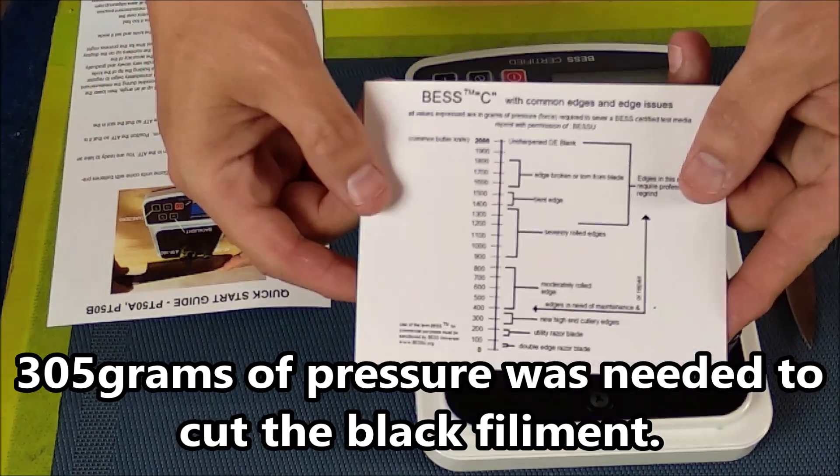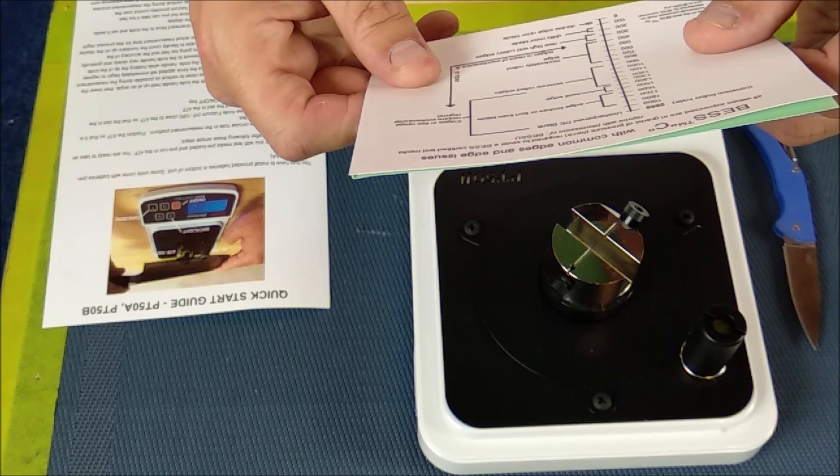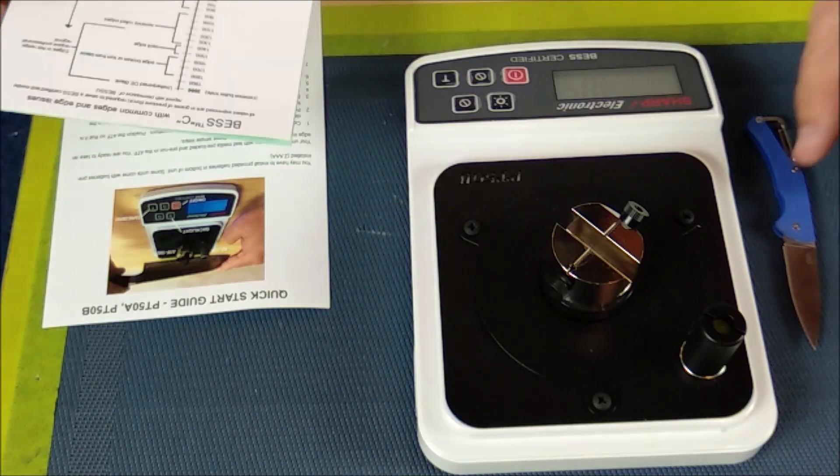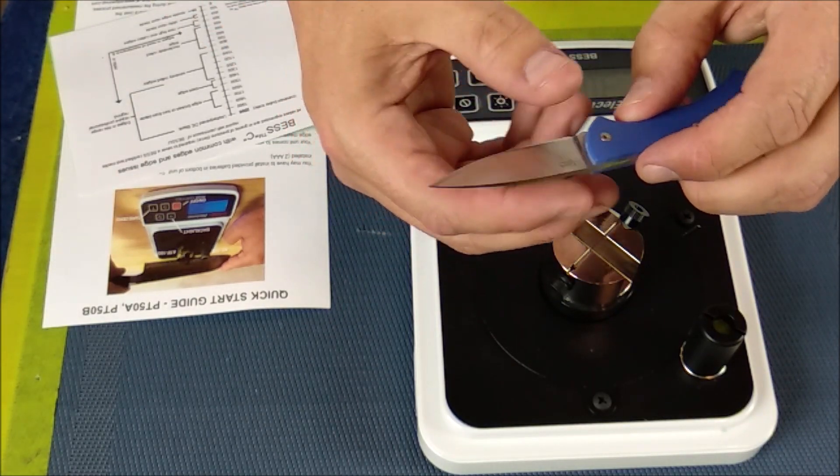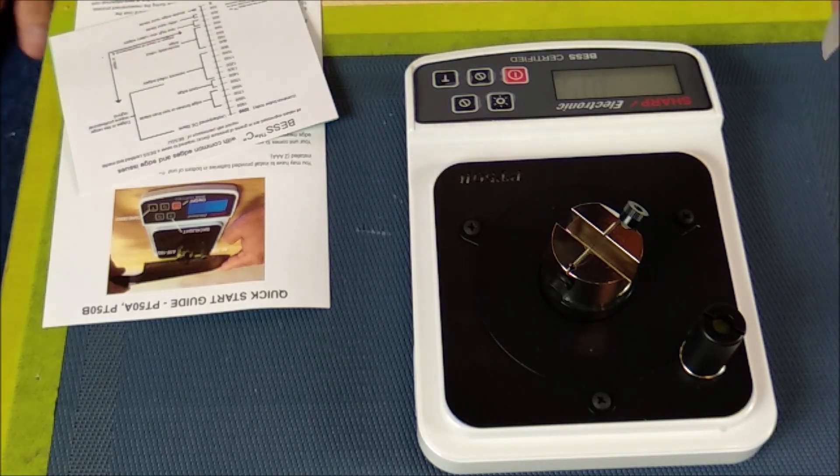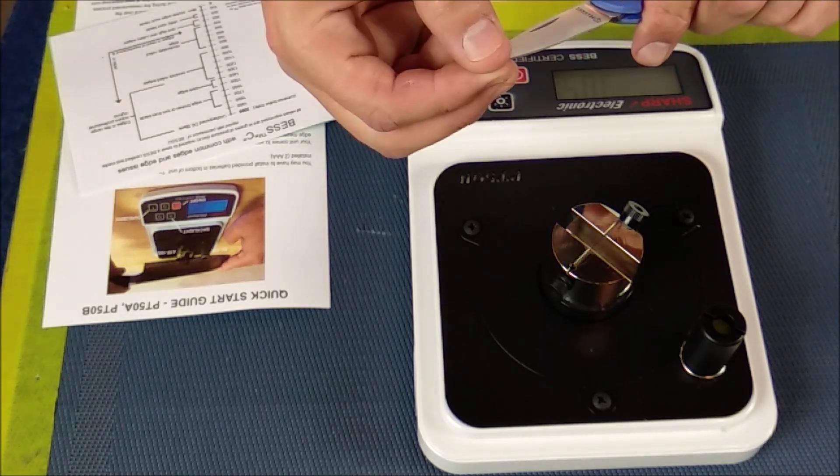If we take a look at our scale right here that comes with the knife, it says 300 to about 350 is high-end cutlery edges. And yeah, this is basically the factory edge that this Lark has, so it's right in that range.